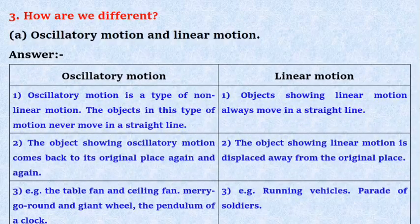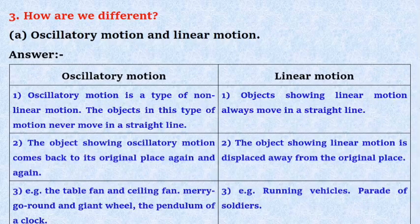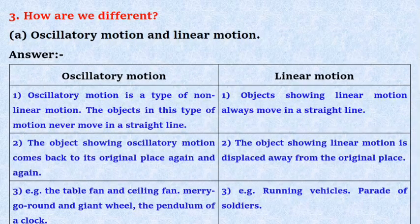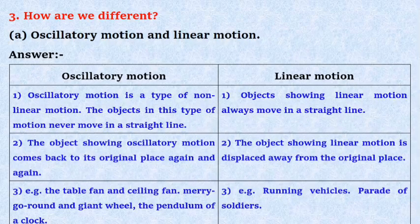Oscillatory motion is a type of non-linear motion. The objects in this type of motion never move in a straight line. In linear motion, objects showing linear motion always move in a straight line.